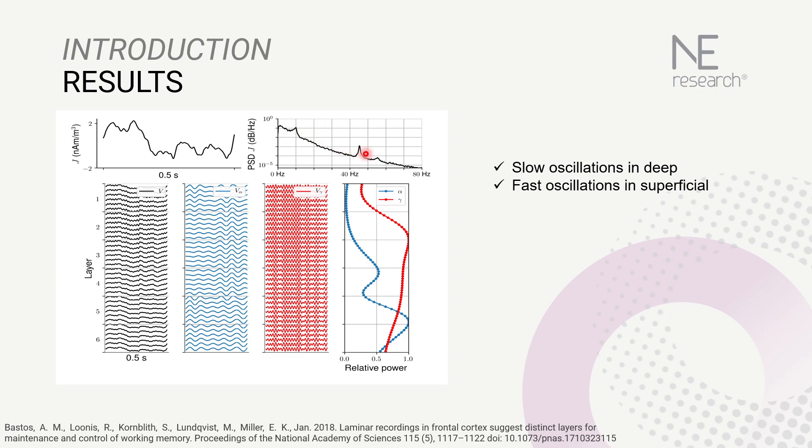This is what we expected since our generators are oscillators in these frequency bands. Here we can see the simulated voltage traces filtered in alpha and gamma, and the relative power for each layer. This replicates the laminar recordings from the Bastos group, where we see predominance of gamma activity in superficial layers and alpha or slow activity in deep layers.